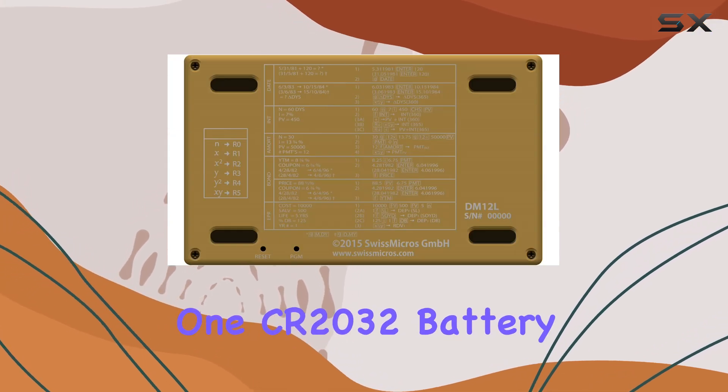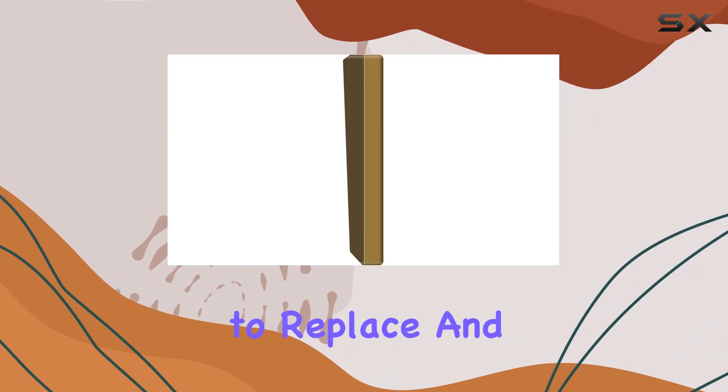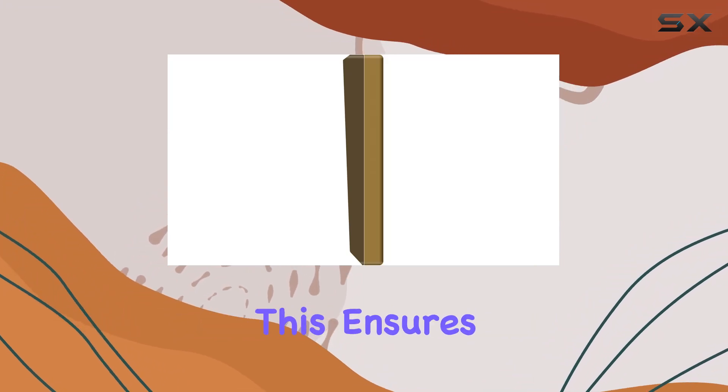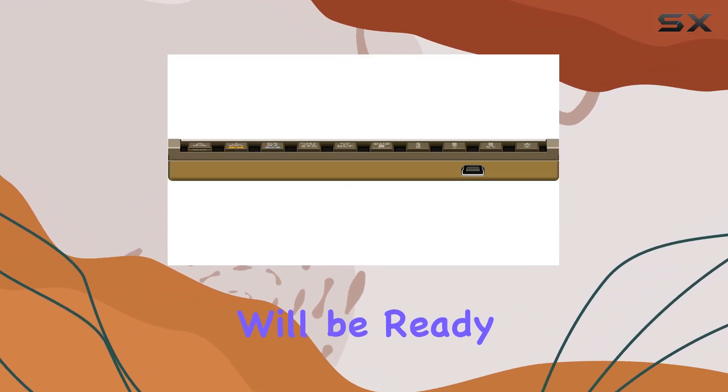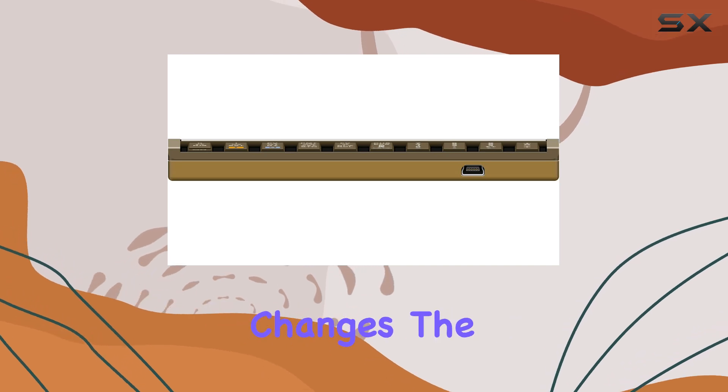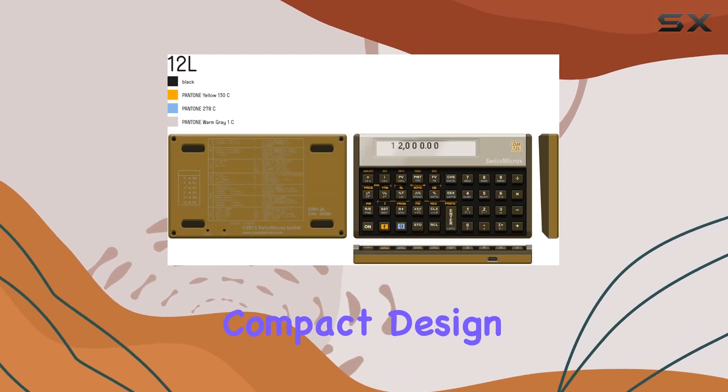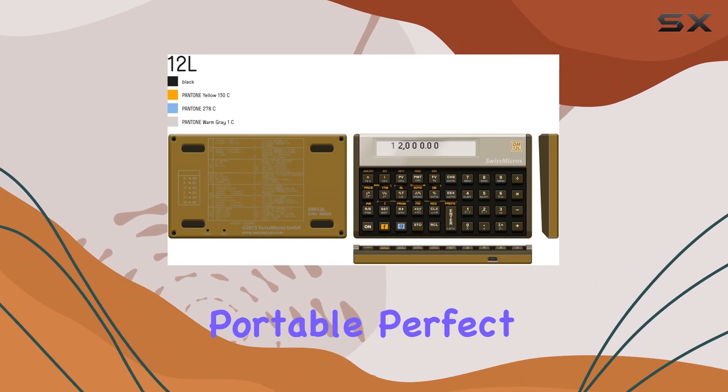The DM12L is battery-powered, requiring just one CR2032 battery, which is easy to replace and commonly available. This ensures that your calculator will be ready whenever you need it without the hassle of frequent battery changes.